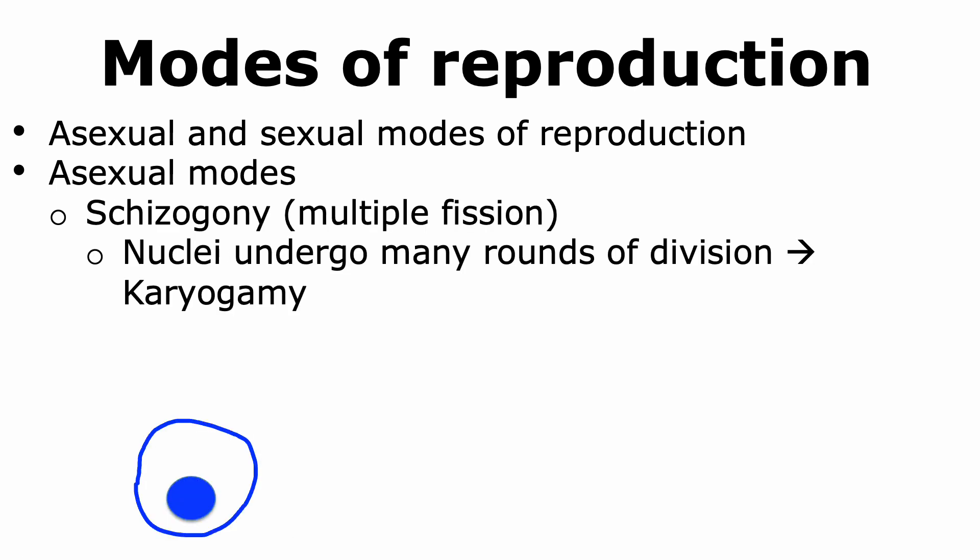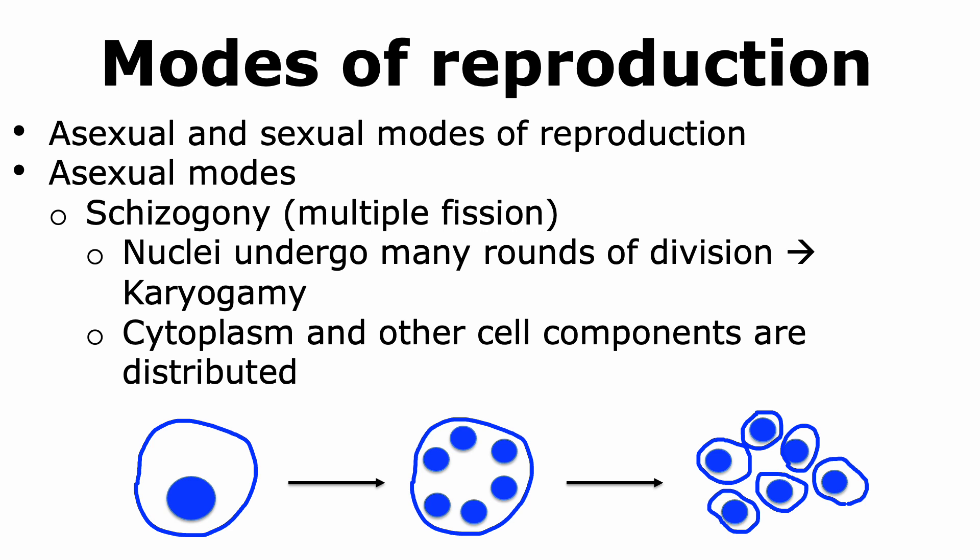Another mode of asexual reproduction is called multiple fission, or schizogony. In this scenario, we start off with the parent cell, and the nucleus undergoes many rounds of division to give rise to many nuclei present in that single cell. This division of nuclei is called karyogamy. Once multiple nuclei are formed, the cytoplasm and other cell components are distributed, and hence we can end up with many daughter cells.